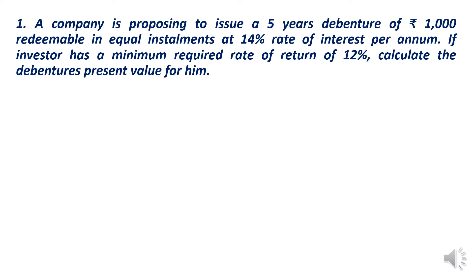Consider this question: a company is proposing to issue a five-year debenture of 1000, redeemable in equal installments, at 14 percent rate of interest per annum — so the coupon rate is 14 percent. The investor has a minimum required rate of return of 12 percent, that is Kd = 12 percent. Calculate the present value of the debenture. These debentures are redeemable in equal installments, so 1000 divided by 5 gives 200 rupees redeemed per year.